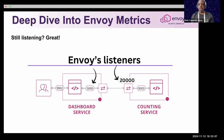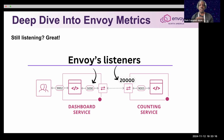Envoy's listeners are just ports that are open to check or listen on connections between your services. Looking at this picture, we're in the mesh and we see dashboard and counting, with two listeners on port 5000 and 20000.